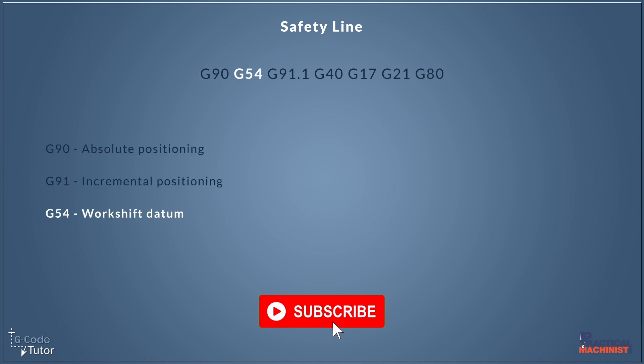The next one I've added is G54. G54 is our work shift datum — it's our standard datum. If we're working on a different datum, we would add G55, G56, or whichever datum we were using. Assuming we're just working with the one datum, the one work shift, I'm calling that in the safety line so that each time we rerun each block of code, it rereads where our datum is.